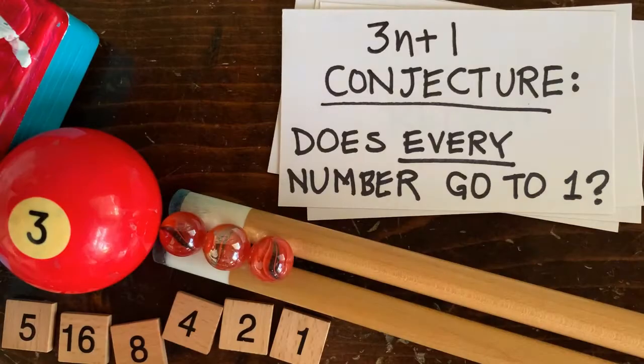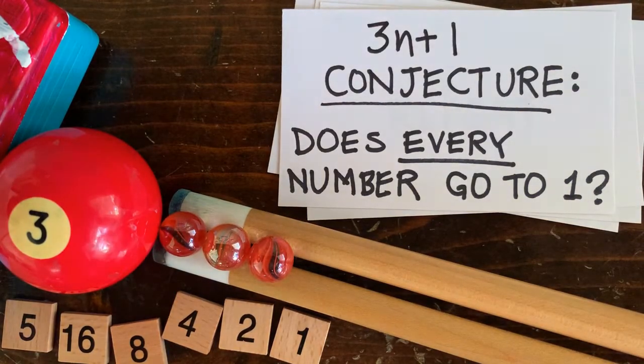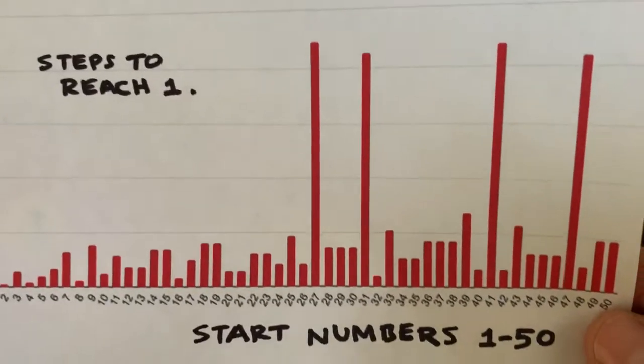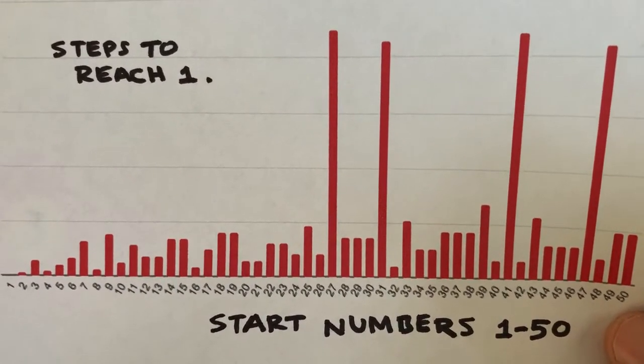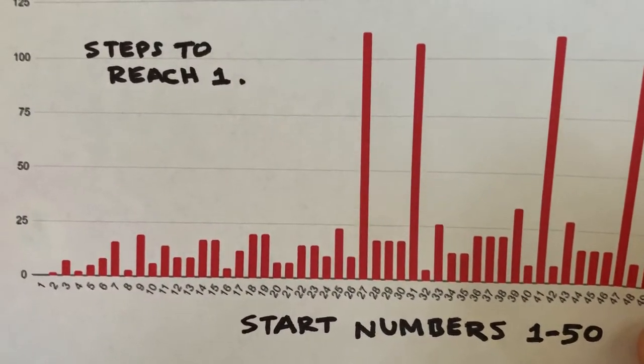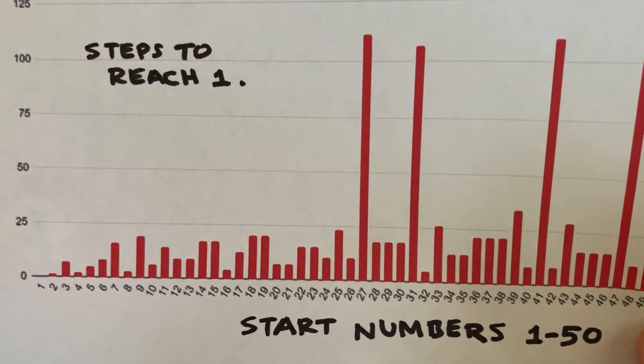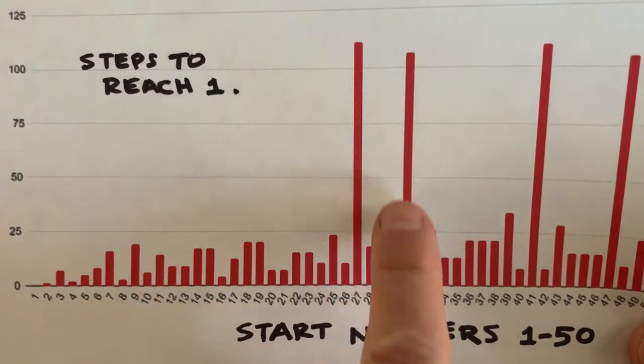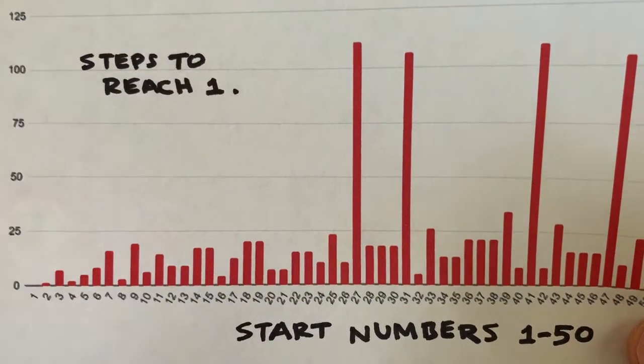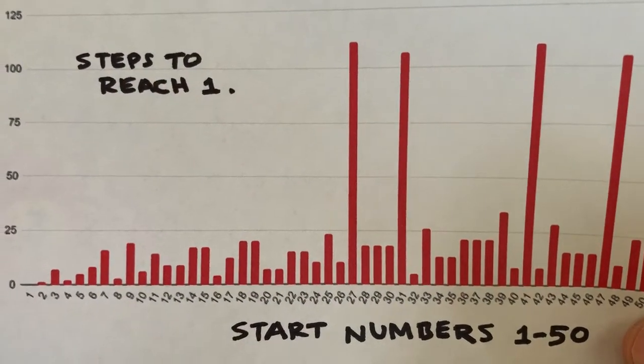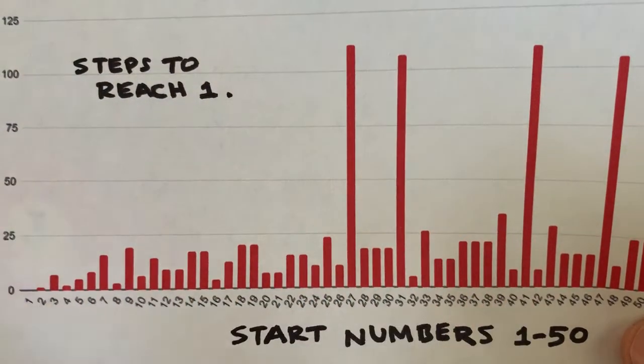How long does each start number take? Let's put the first 50 start numbers on a graph on the x-axis here. On the y-axis is how long each start number takes to reach 1. Right here, you can see if we start with the number 31, it takes 106 steps to reach 1. So you can see what I mean about math being unpredictable and chaotic.